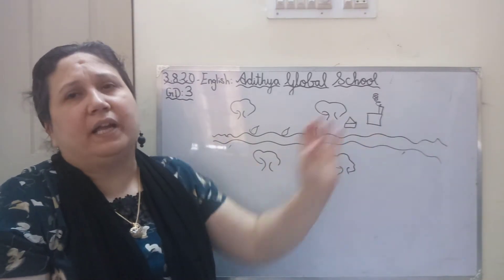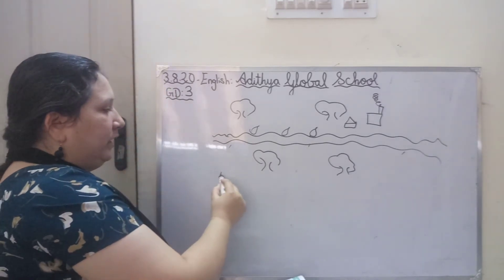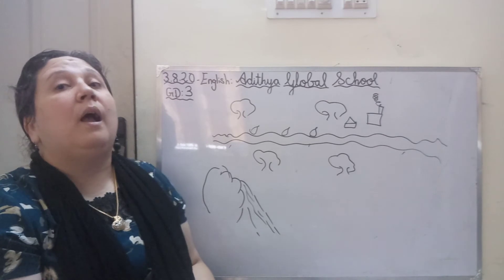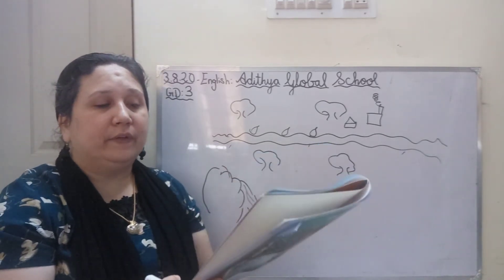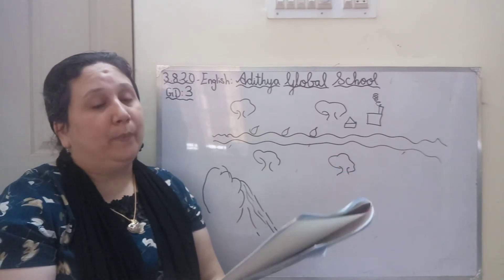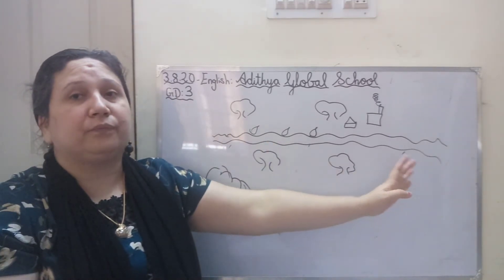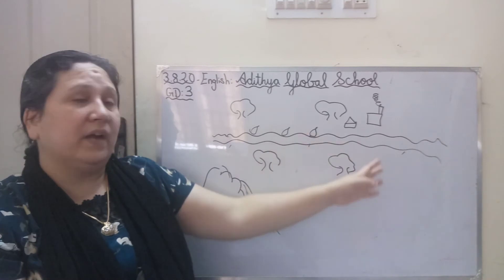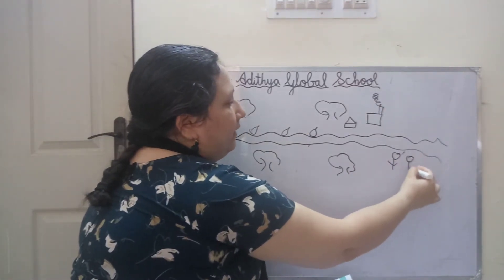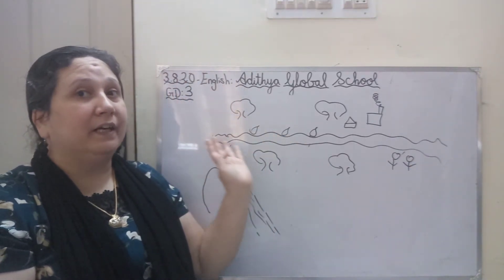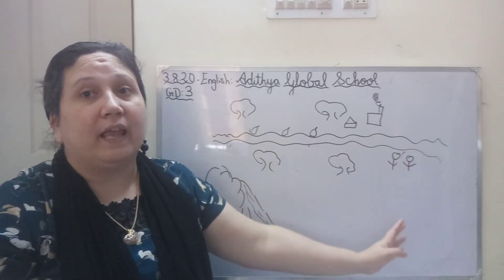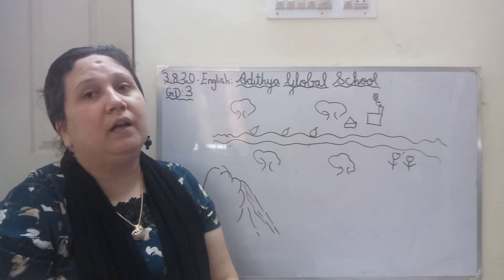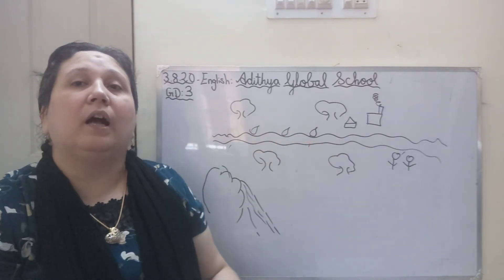'Away down the river, a hundred miles or more, other little children shall bring my boats ashore.' The river is going a hundred miles — so far it is going. There will be river banks, and small little children will be playing there. The boat that started here might reach those children, and they will bring it back home. So it's a very beautiful poem about a beautiful river, and how pretty it looks to see a river flowing down like this.